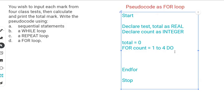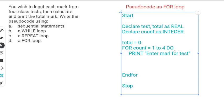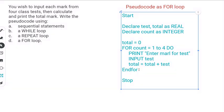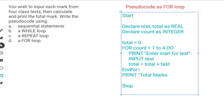The next statement will be printing a message for the user: PRINT 'Enter mark for test'. We accept the INPUT from the user as 'test'. We calculate our total: total = total + test. Then we print 'Total marks' along with the variable total after the loop ends.